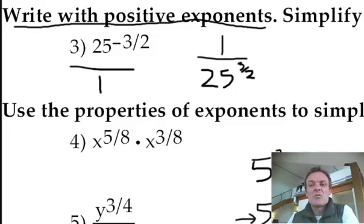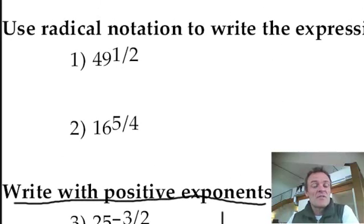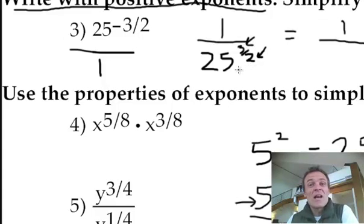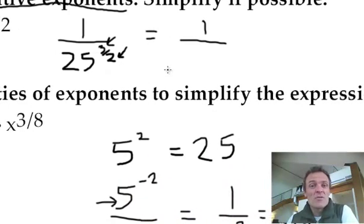Then you have to remember how to work this out, remember these from previously? So that is going to equal 1 over, what it's saying is, remember this, let's square root first and then cube it. So what's the square root of 25? The square root of 25, so I'll do that first.